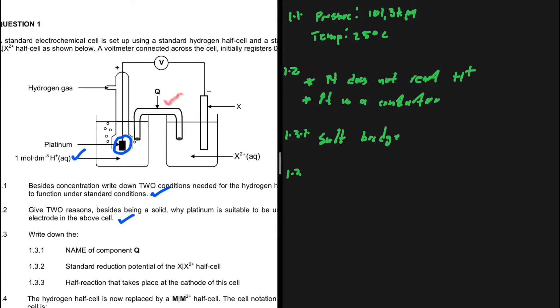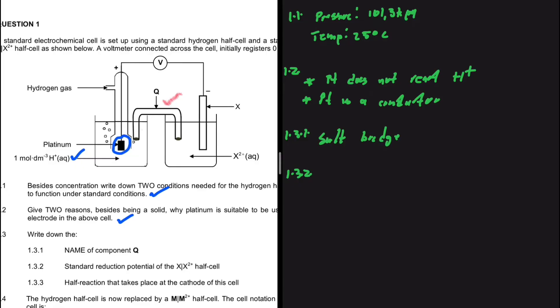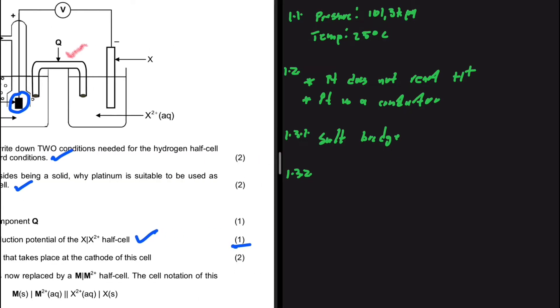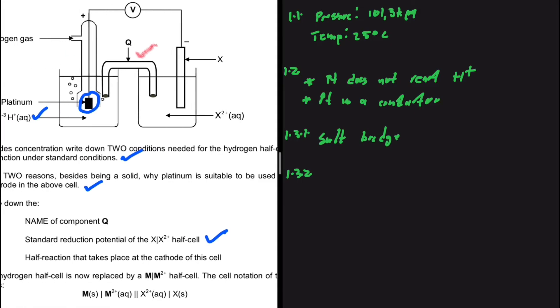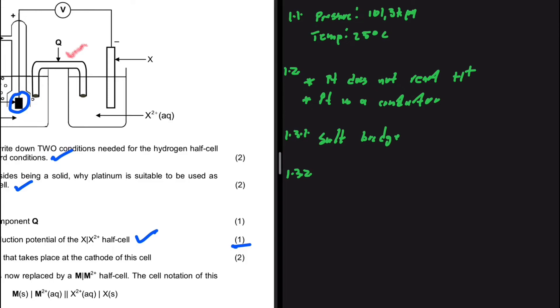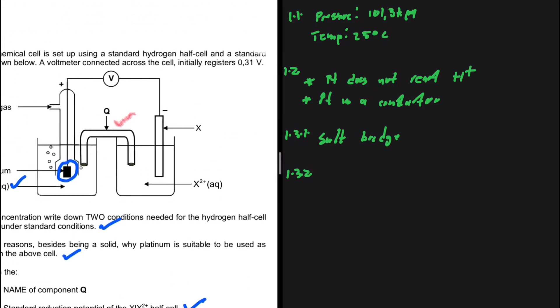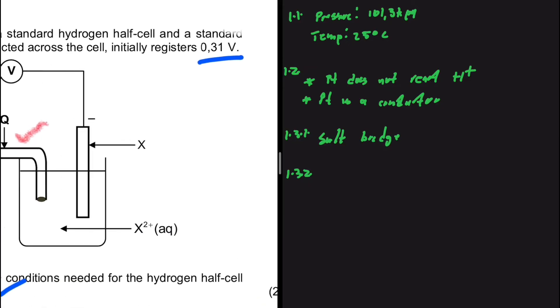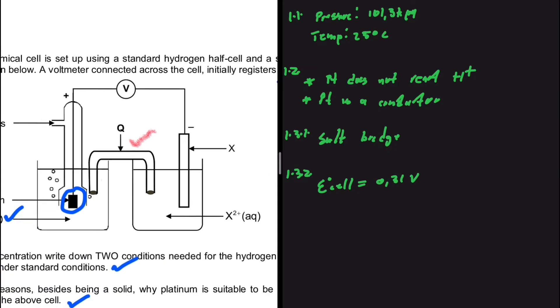And 1.3.2, what is the standard reduction potential of the X2+ half-cell? This is for one mark. And when you are familiar with this kind of question, you're going to be able to answer it without any difficulties. But here we sort of have to take the long road so I can show you what is happening. Let's look at the information we have. We are told that the initial EMF that is registered is 0.31 volts.